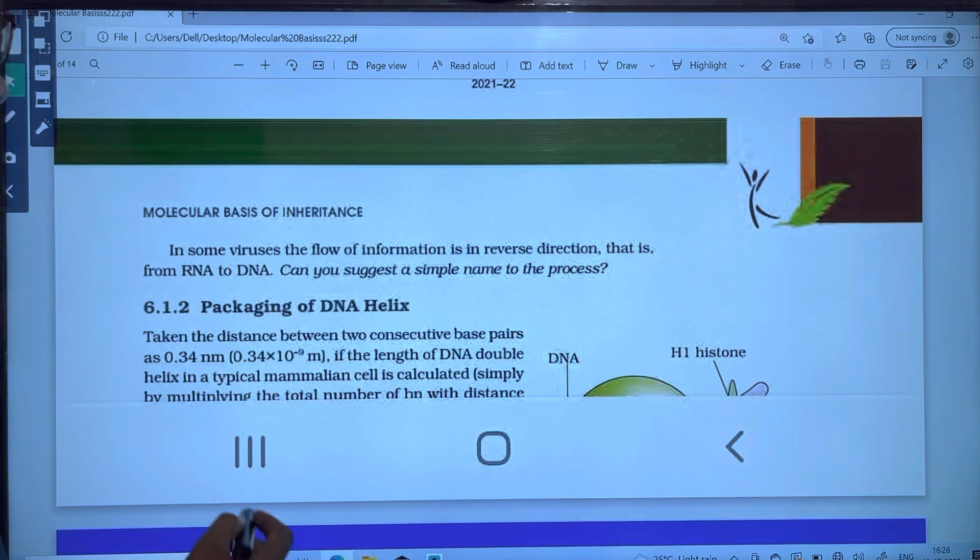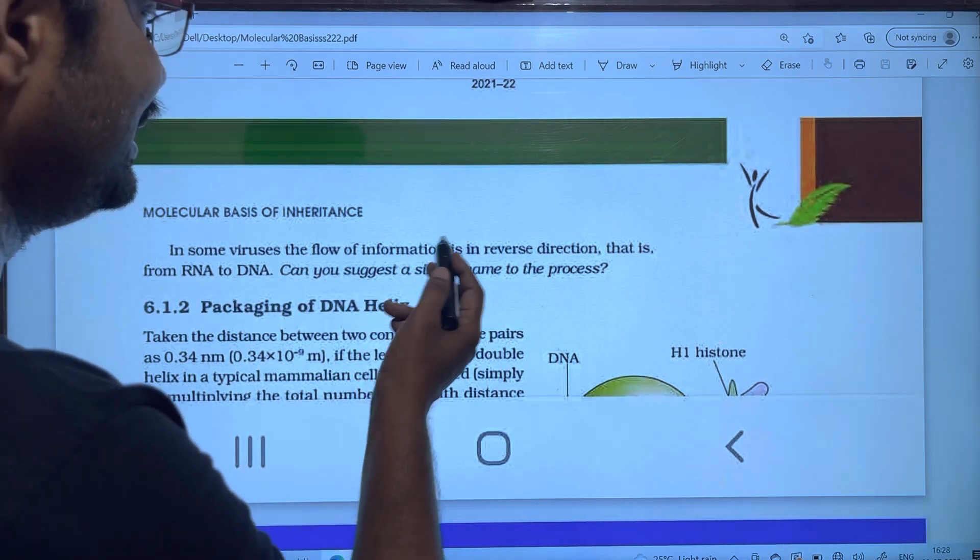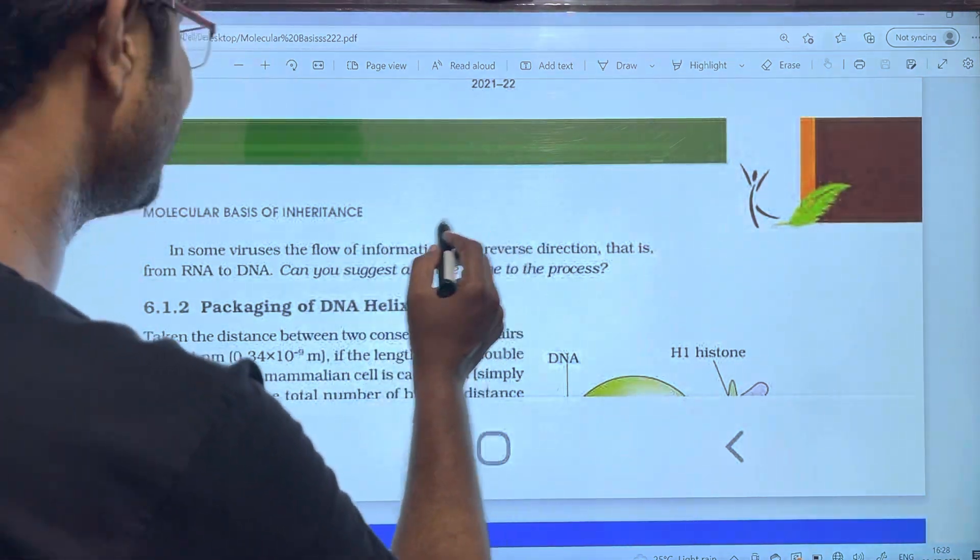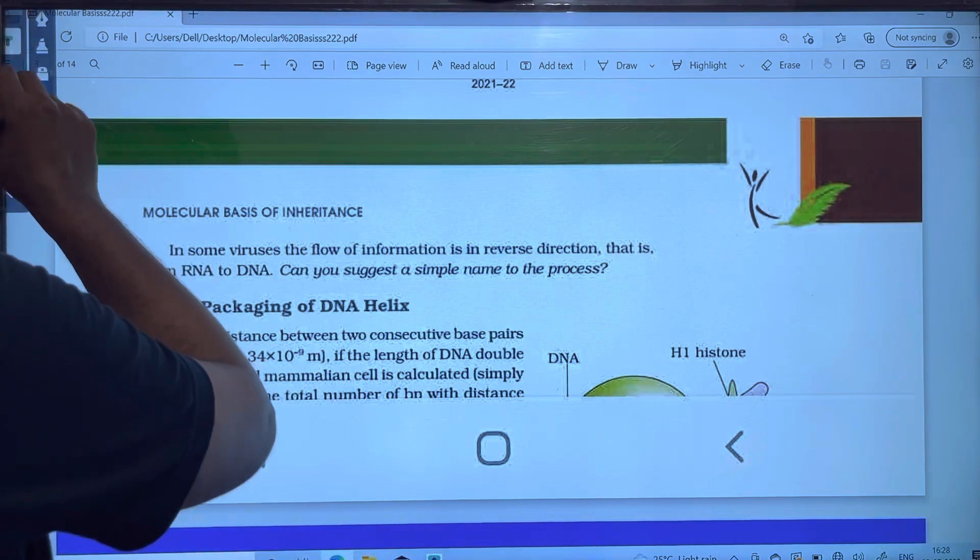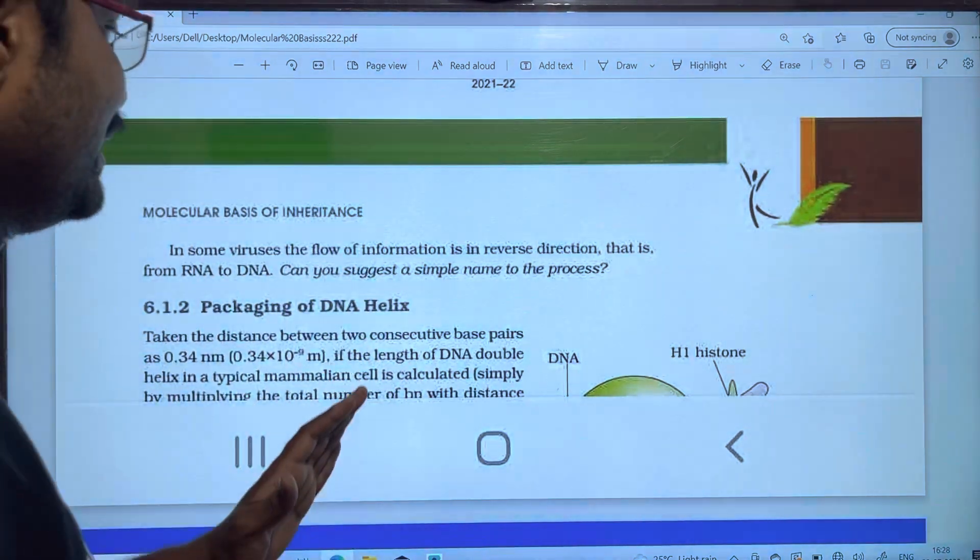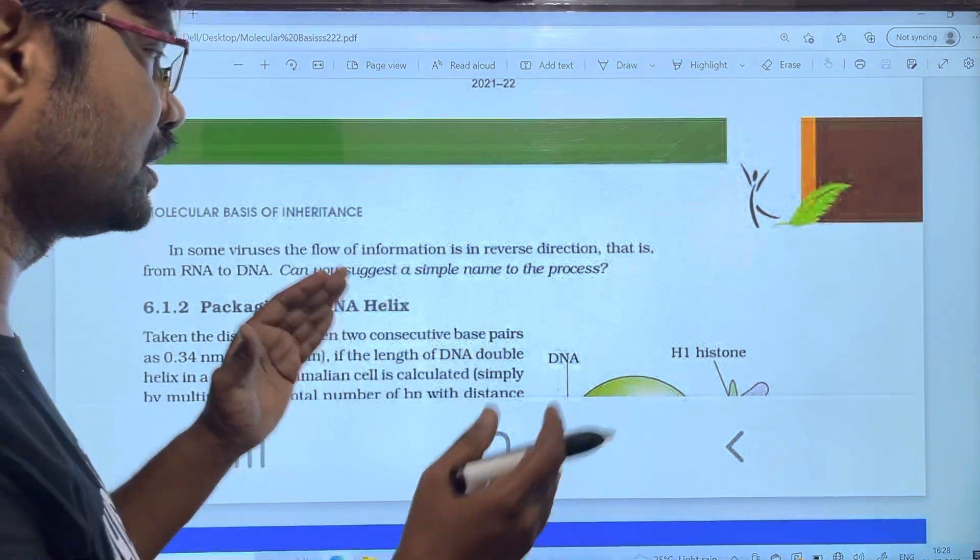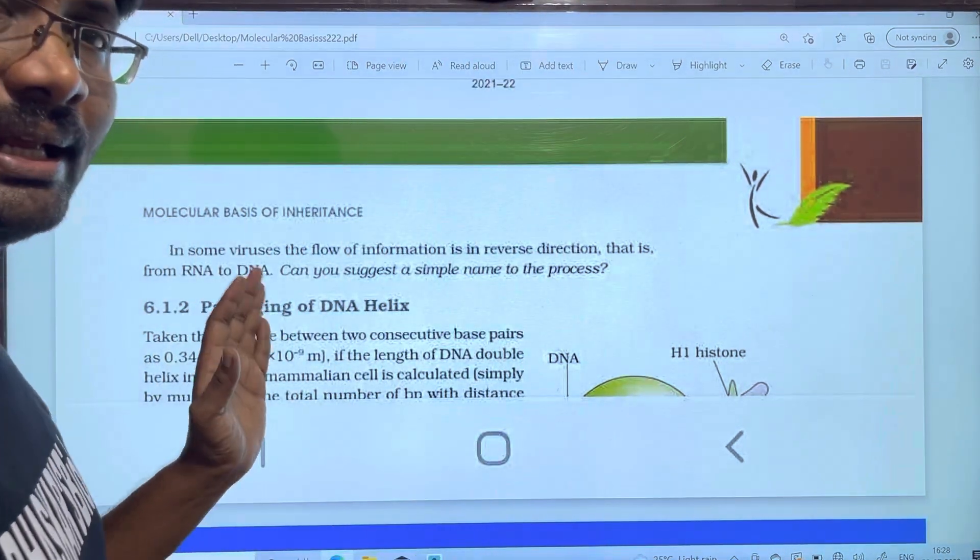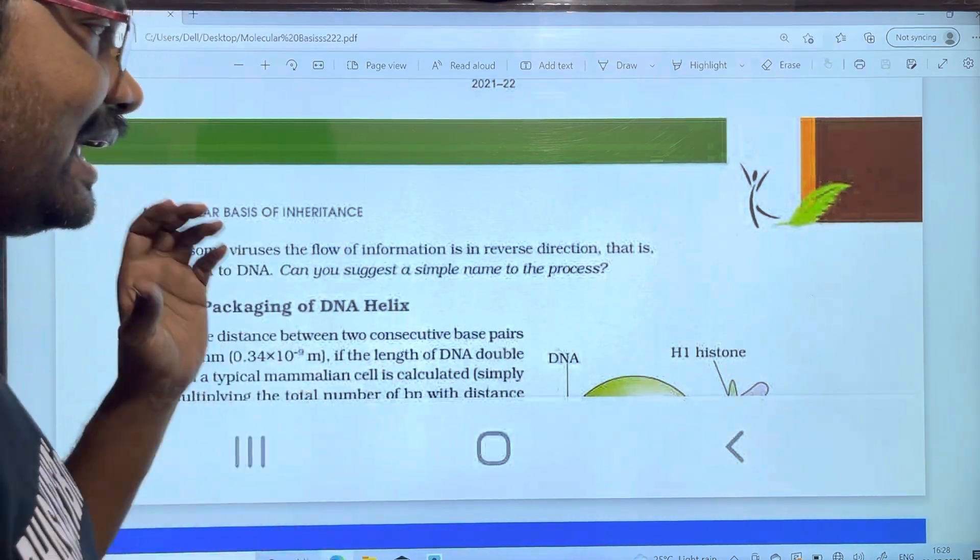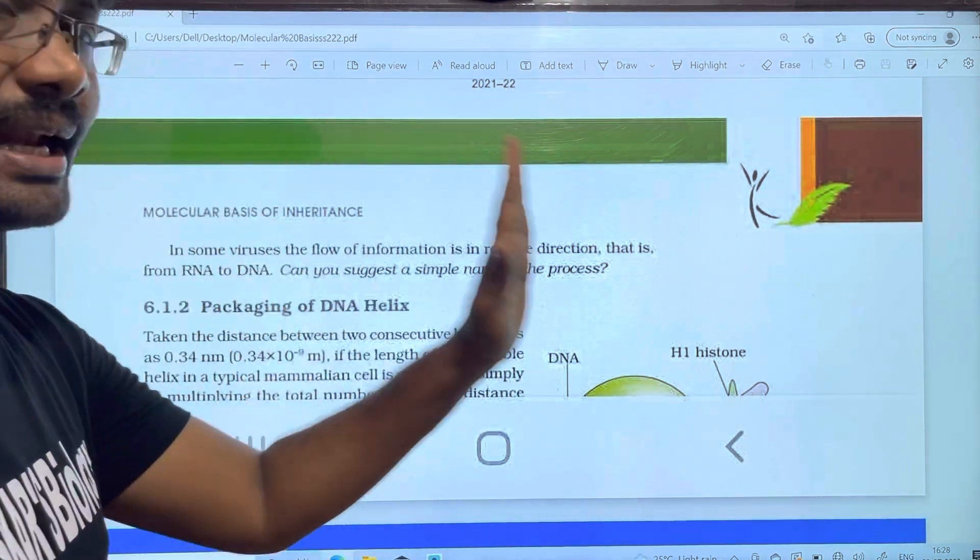In some viruses, the information flows in reverse direction, that is from RNA to DNA. For example, HIV virus has RNA that produces DNA. This is done by reverse transcriptase. Normally transcription is DNA to RNA, but reverse transcription is RNA to DNA.